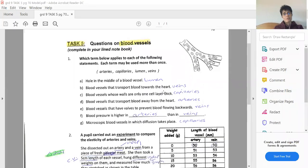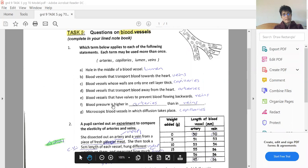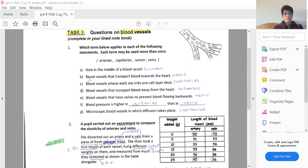So this was the questions on blood vessels. Okay, so remember I asked you to first do question number 1. So the hole in the middle of a blood vessel is a lumen. Blood vessels that transport blood towards the heart, veins. Blood vessels whose walls are only one cell thick, remember, to allow for easy diffusion, that's capillaries.